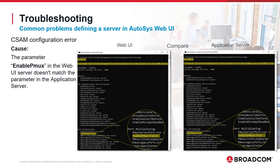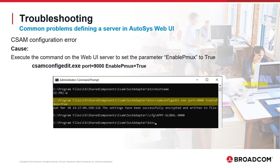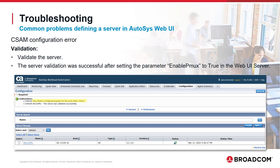We executed the CSAM Config Edit command on the Web UI and the application server to display the definitions of the parameters for port 9000. We noticed the parameter Enable PMux value is not the same on both. To solve the problem, we executed the command on the Web UI server to set Enable PMux to True to match the application server. After validating the server again, we received the message that CSAM is configured properly for port 9000 and the server was validated successfully.